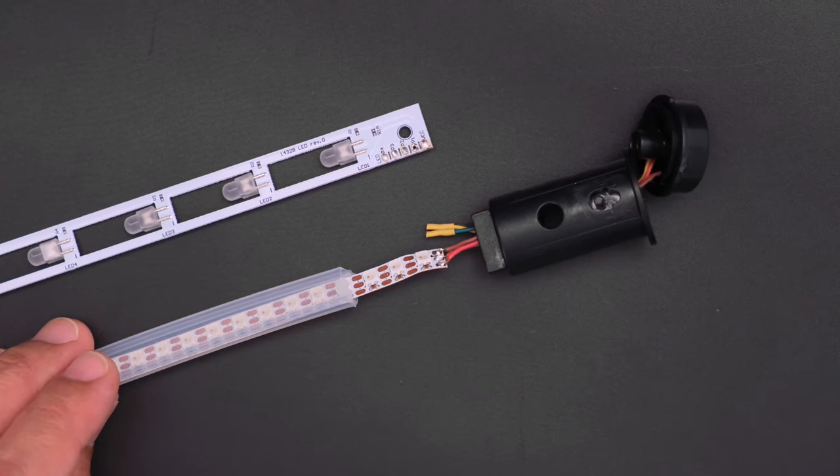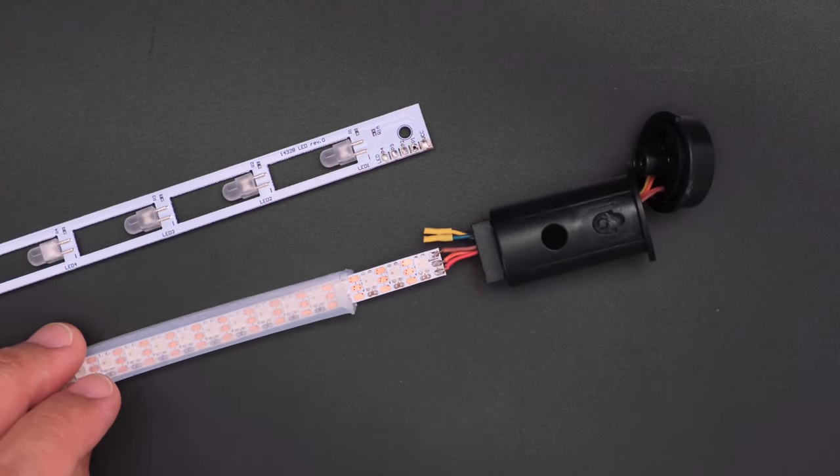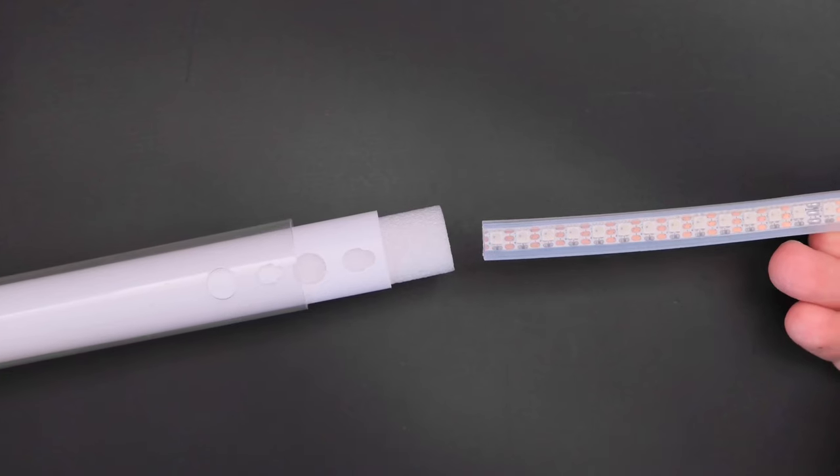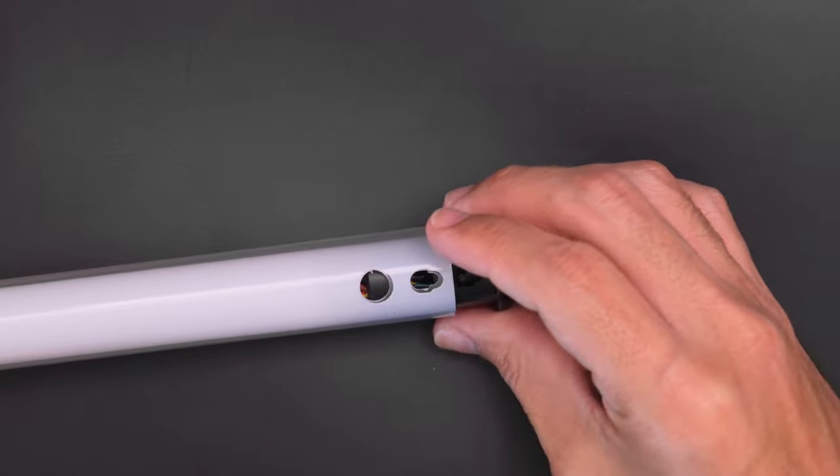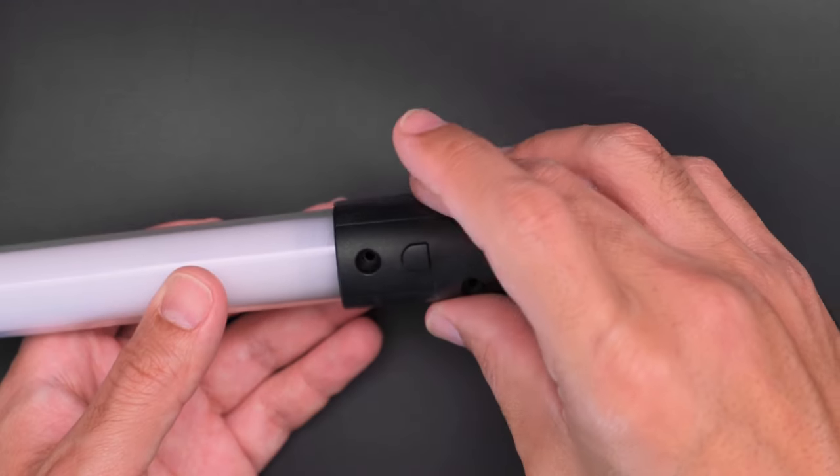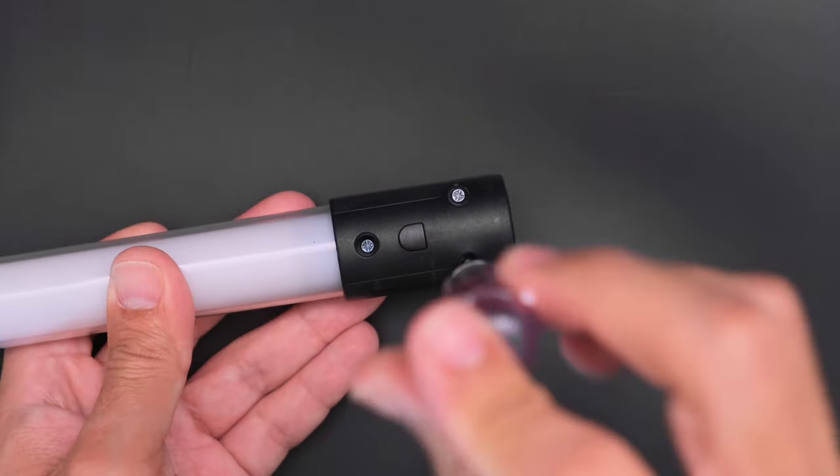Now we can solder the wires from the pogo pin connector to our strip of NeoPixels. Then we can fit it into the diffuser sleeve and slide it back into the tube. Place the covers of the pogo pin connector back onto the blade and secure it using the screws.